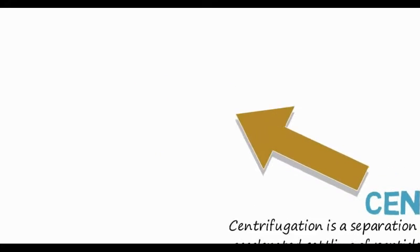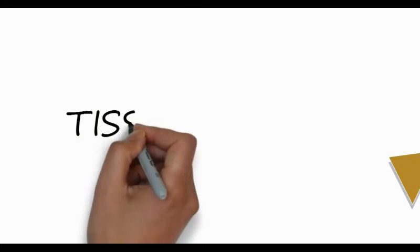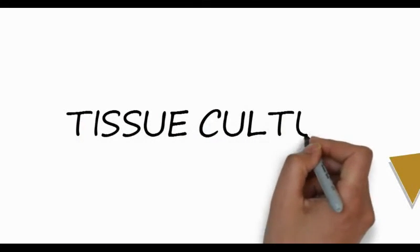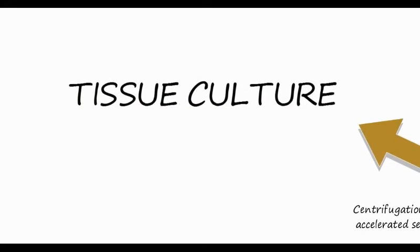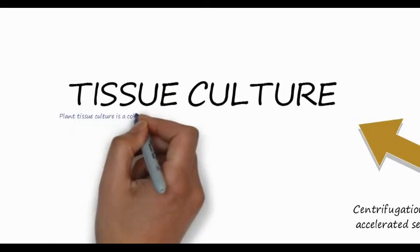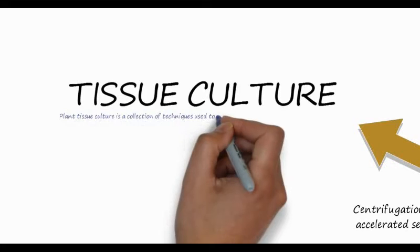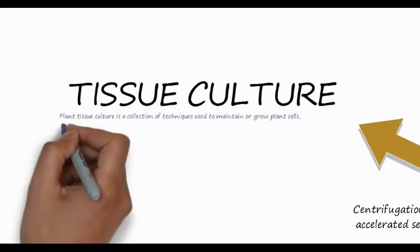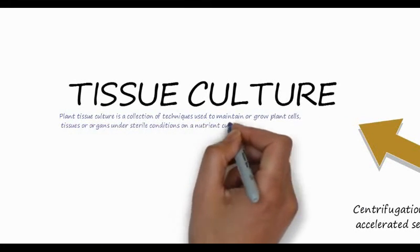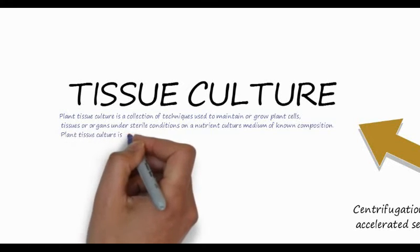The fourth technique is tissue culturing. Tissue culturing is the growth of tissue and cells separate from the organism using liquid or semi-solid growth mediums such as agar. This produces colonies where all the cells have the same characteristics.